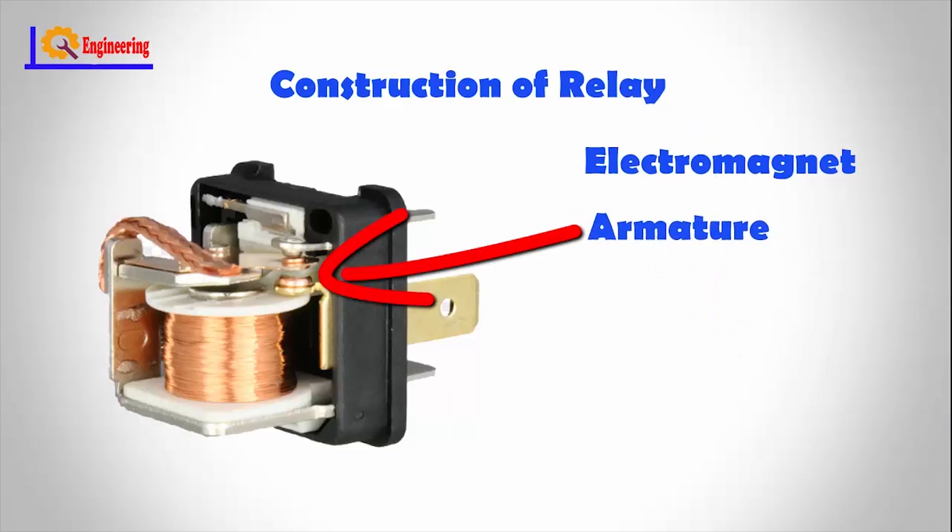Number 2: Armature. The movable magnetic strip is known as the armature. When current flows through them, it energizes the coil and produces a magnetic field, which is used to make or break the normally open (NO) or normally closed (NC) contacts.